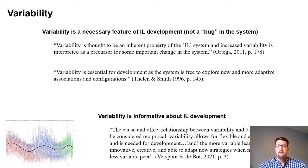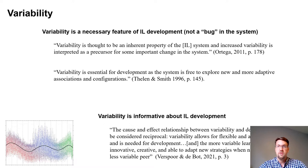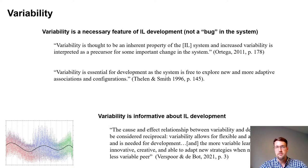Examining variability more closely: for a while now it's been understood as a key characteristic of interlanguage development. More than a decade ago, Ortega said that variability is thought to be an inherent property of the interlanguage, and increased variability is interpreted as the precursor for some important change in the system. We know that a complex adaptive system usually settles in one configuration out of many possible states, but variability is what enables transition from one stable state of development to another. Thielen and Smith said that variability is essential for development, as the system is free to explore new and more adaptive associations and configurations. The more variable learner is also more innovative, creative, and able to adapt new strategies than their less variable peer.